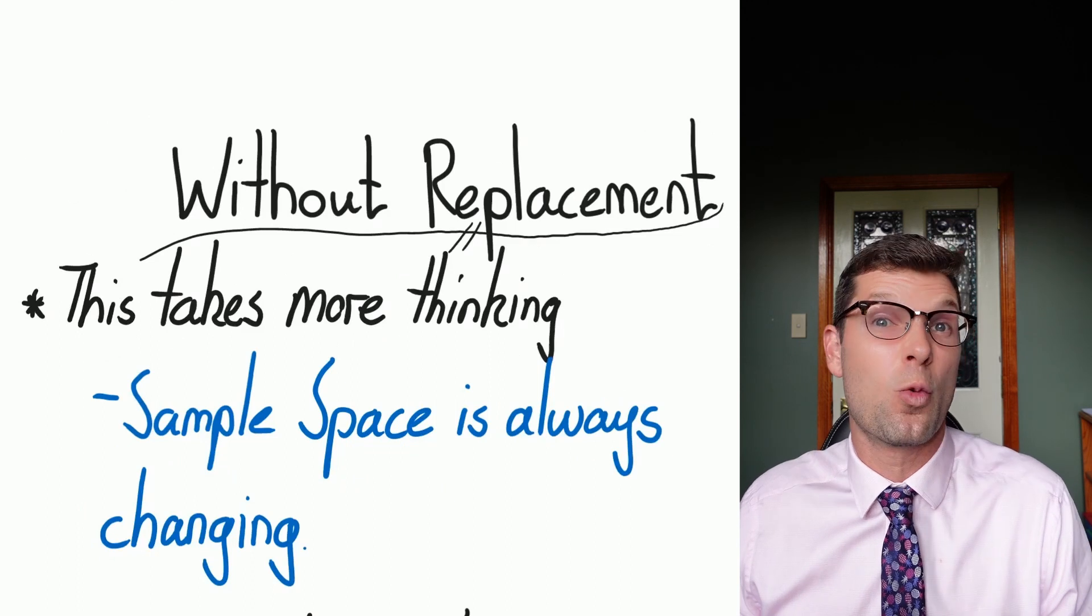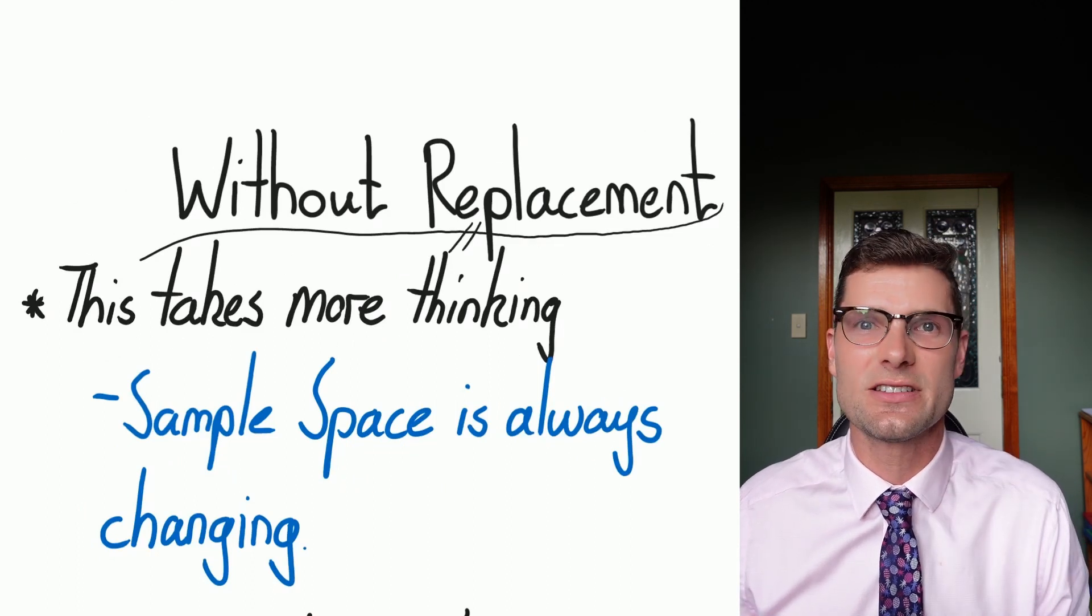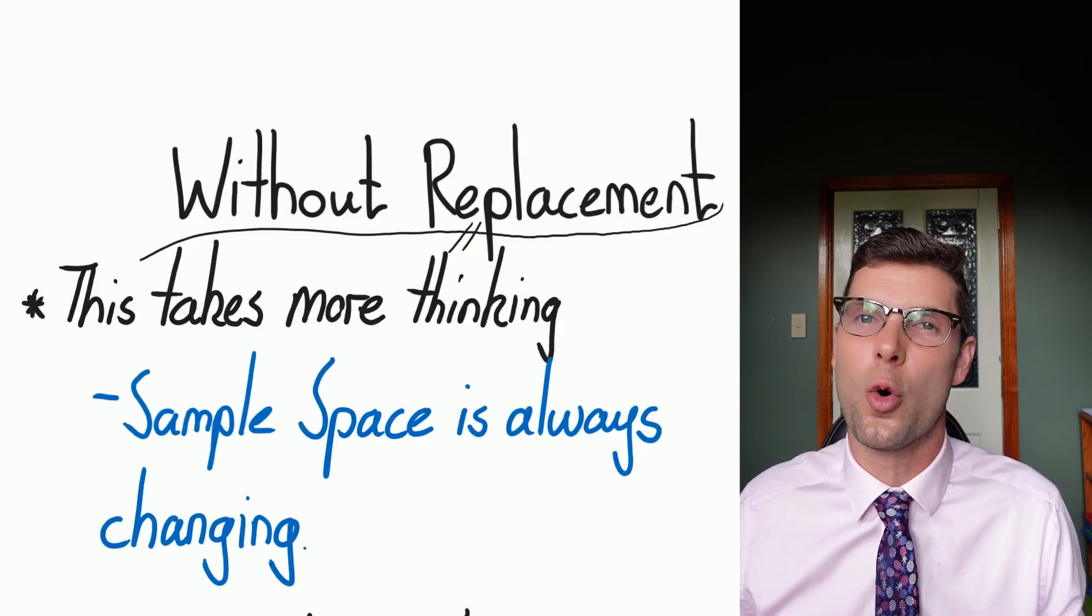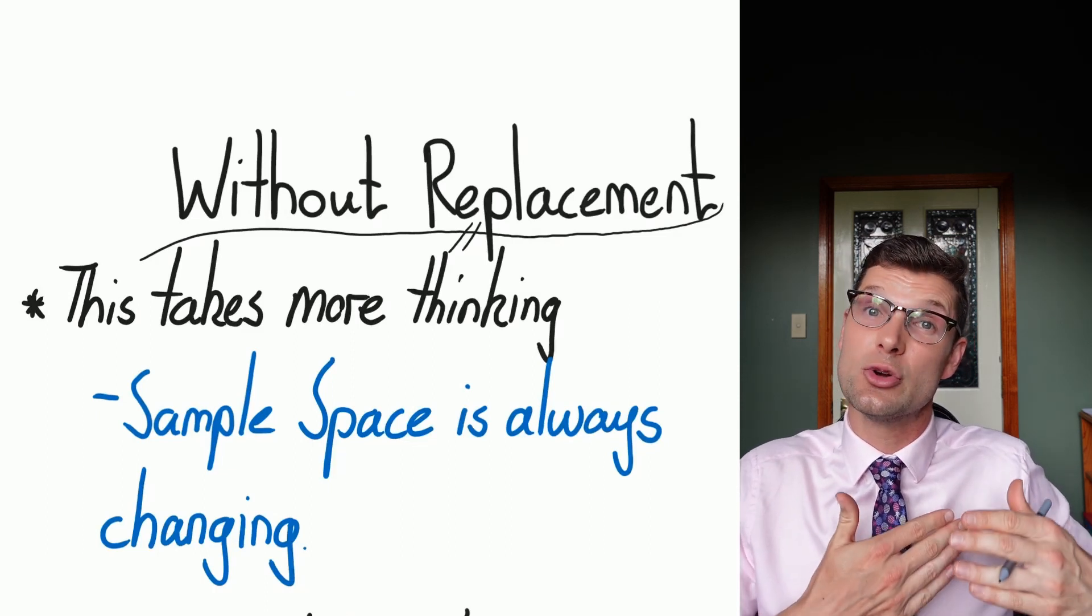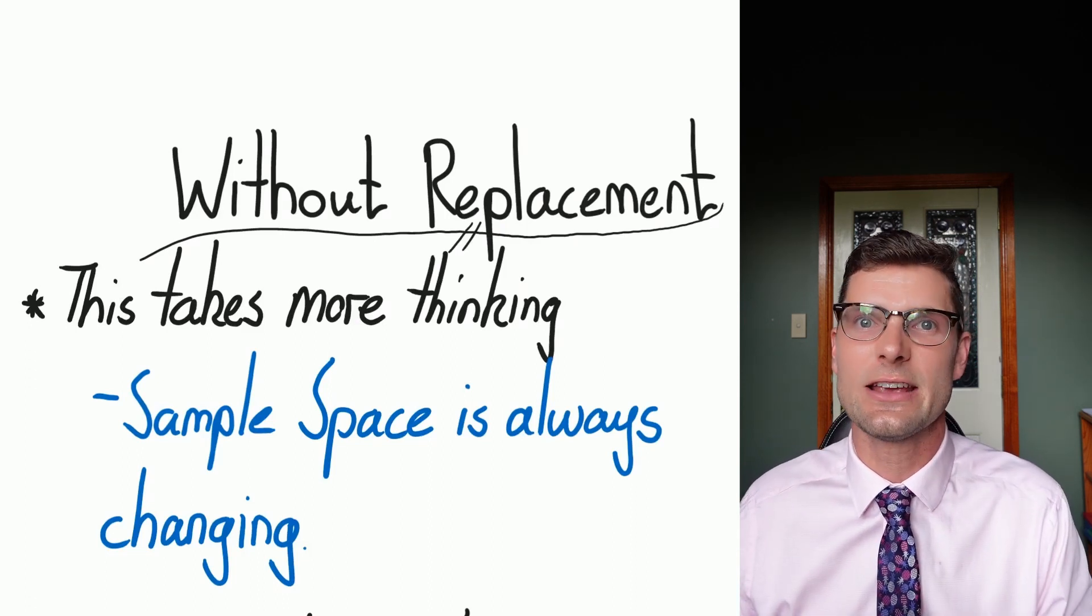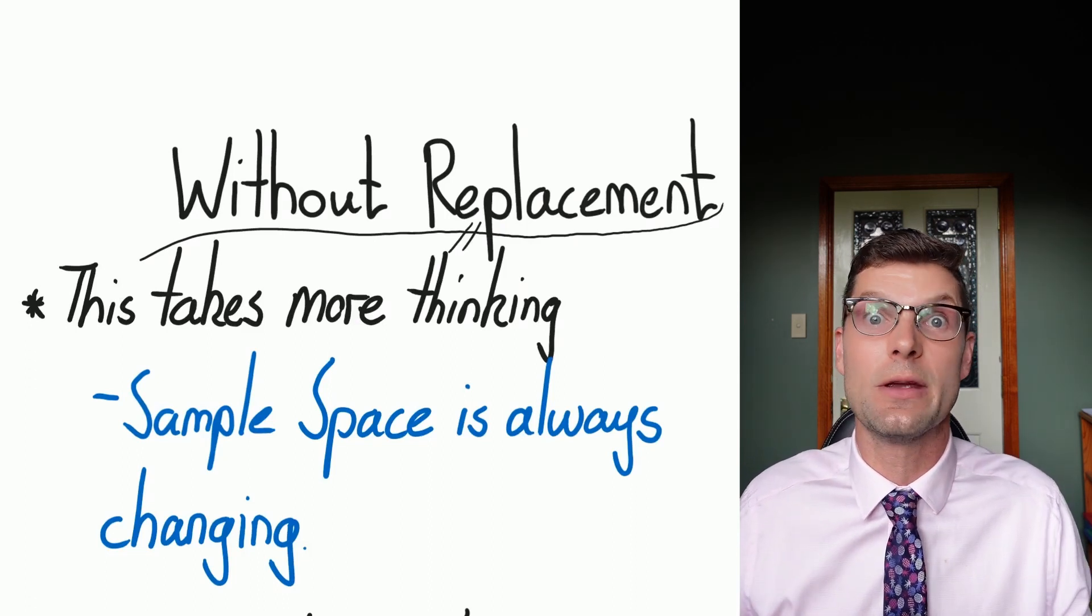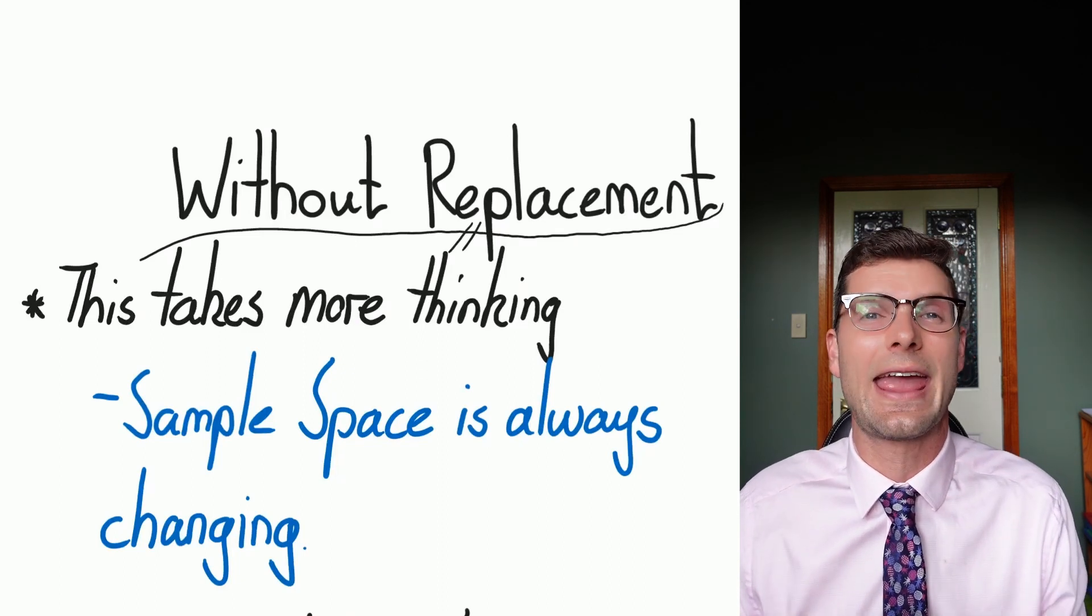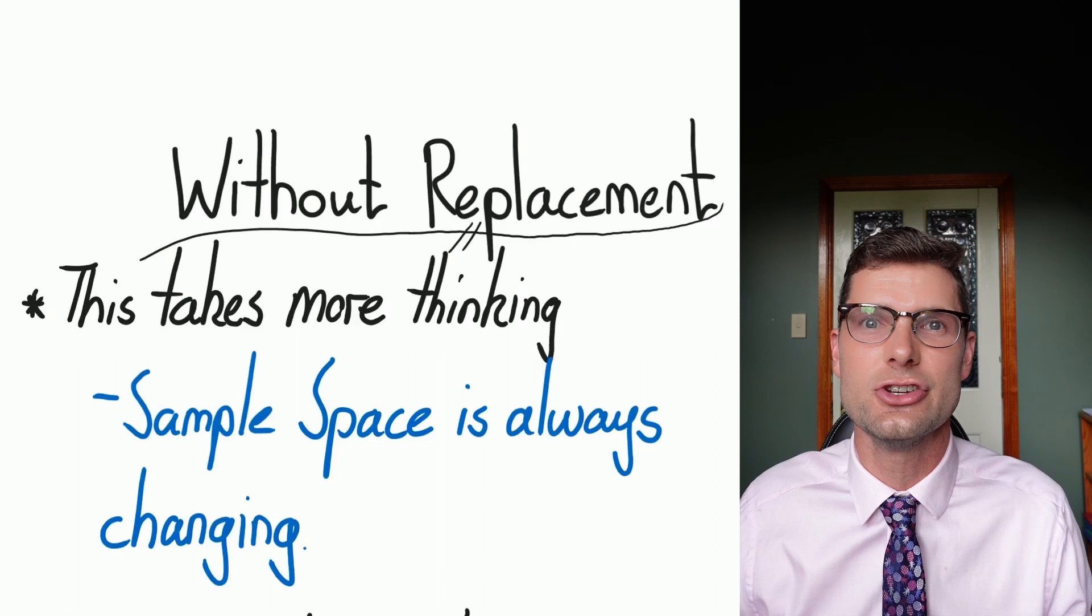As you probably guessed, without replacement is kind of the opposite. It is a little bit harder. You've got to think a little bit more. And this is because the sample space is always changing, because what you do in the first experiment then dictates what's going to happen in the next one. Something might now not be possible because it's happened the first go round, and you've got to account for that in your calculations.